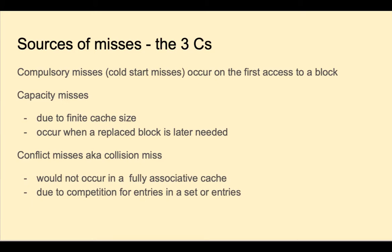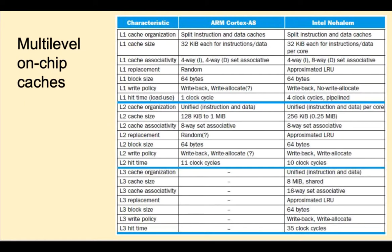Here we see a comparison between the ARM A8 and an Intel chip in terms of their cache organization. Both the ARM and Intel chips have L1 and L2 caches. Only the Intel chip has an L3 cache. We see that in the L1 cache, both processors have separate caches for instruction and data of size 32 kibibyte. And the associativity is set associative. A random replacement is used in the ARM A8, whereas the Intel uses a least recently used algorithm. Block size in both is 64 bytes. And they both use write back.